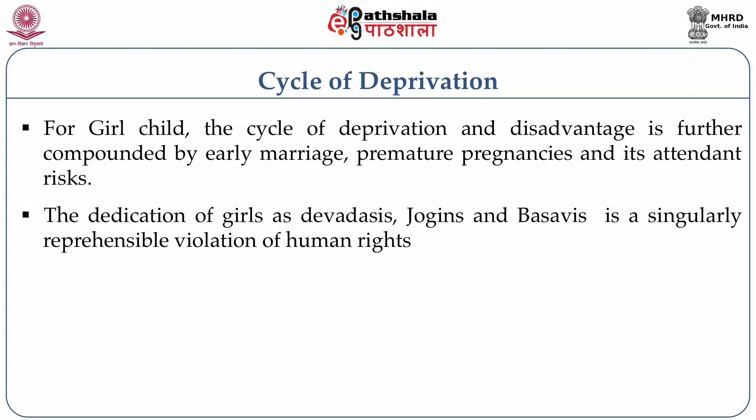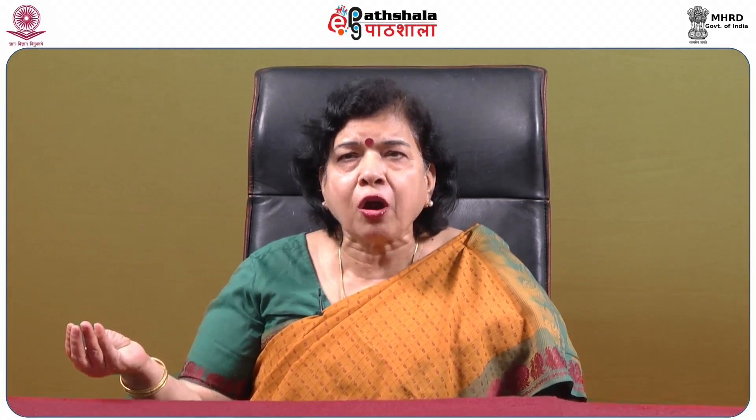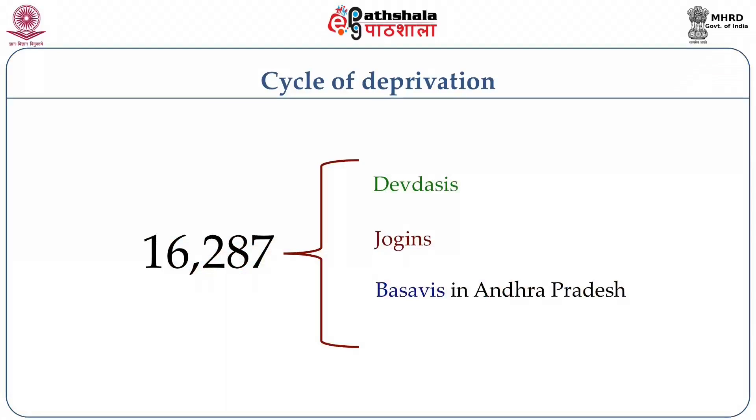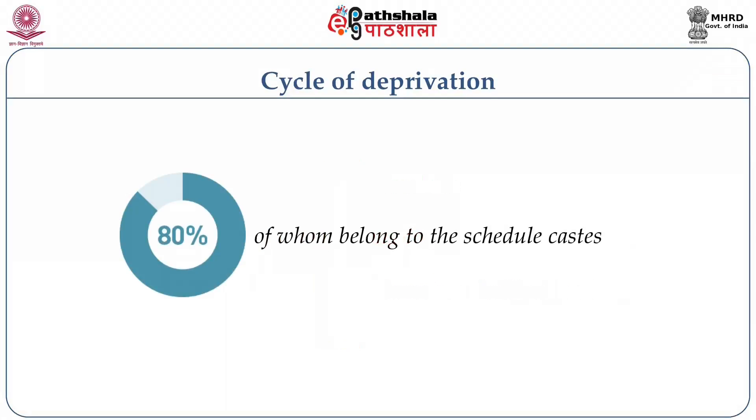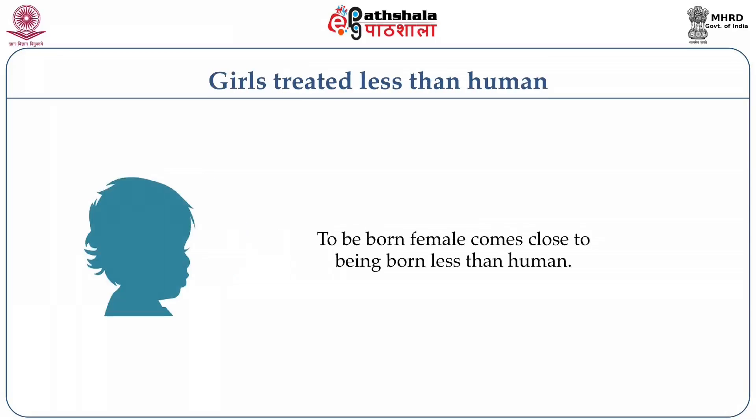Many of these girls are given as a gift — married to a god, especially Devdasis, Jogins, and Basavis — but they become the common property of the village. In a village family, if they do not get a son, they pledge that if they have a son, they will give up their first daughter as a Jogin. Many of these girls are exploited in the name of religion. In surveys, it was shown that many Jogins, Basavis, and Devdasis belong to the scheduled caste — so there is also a caste angle.